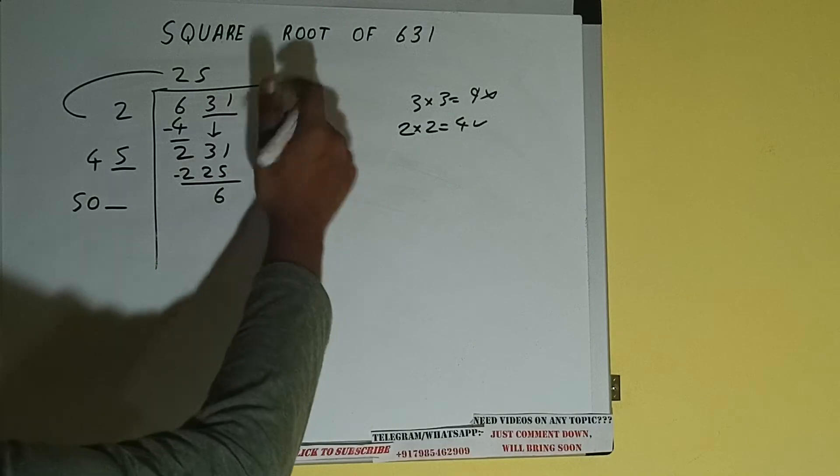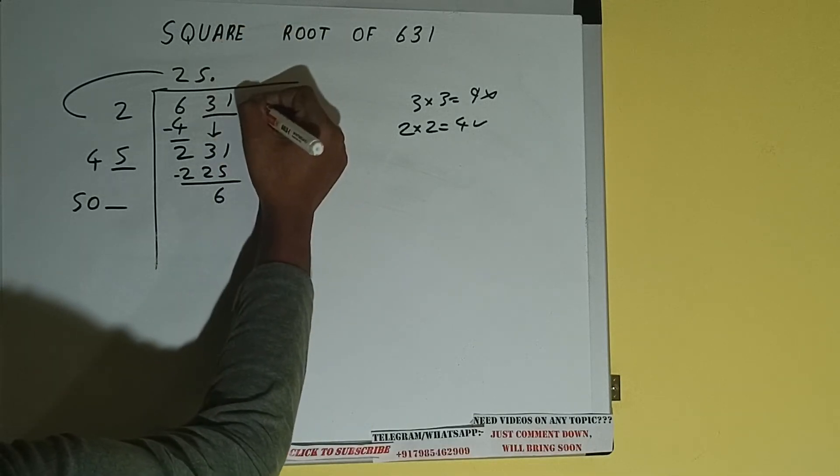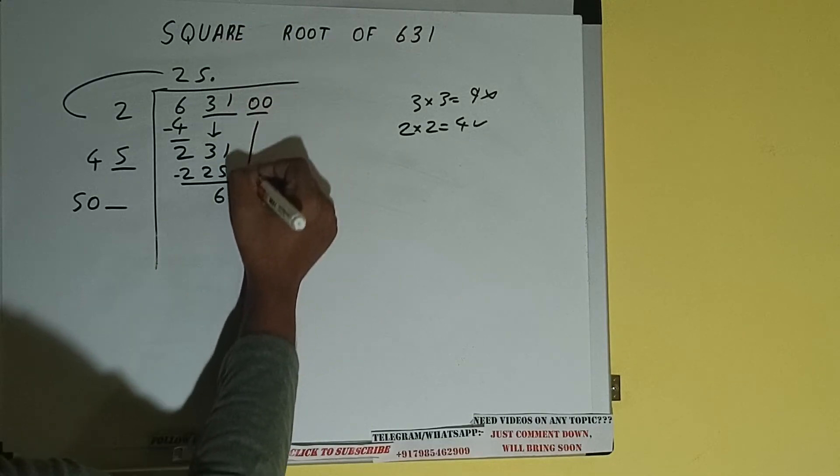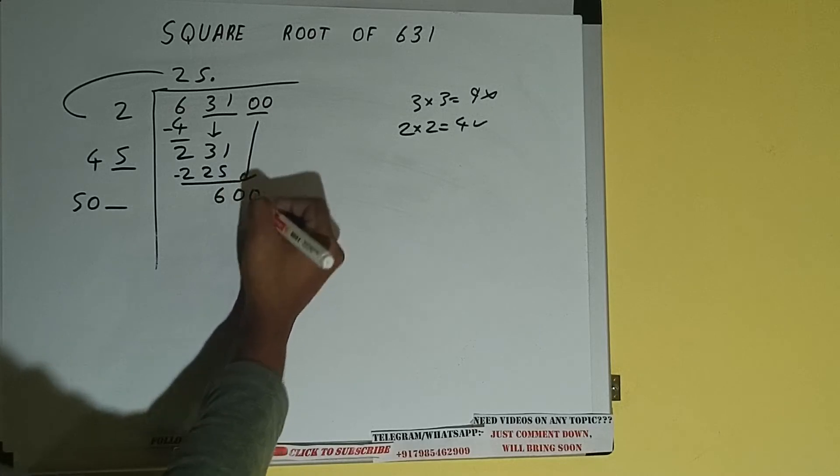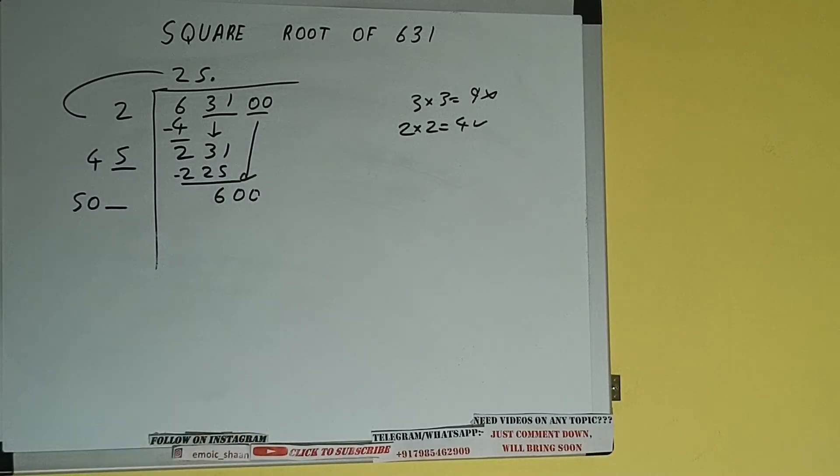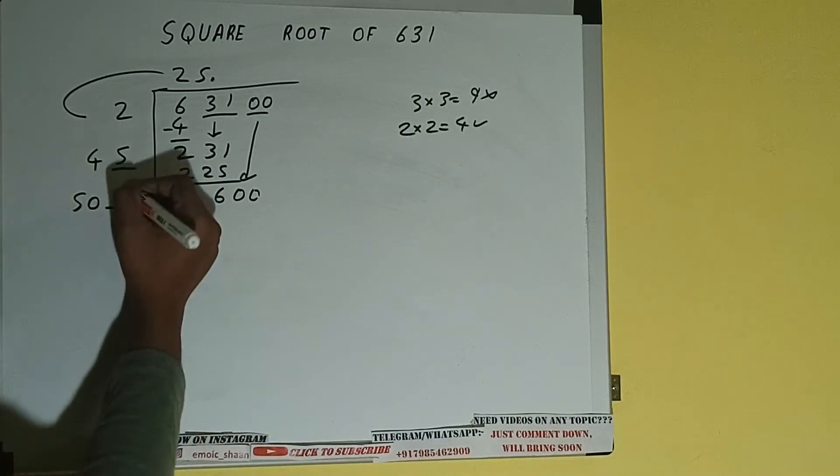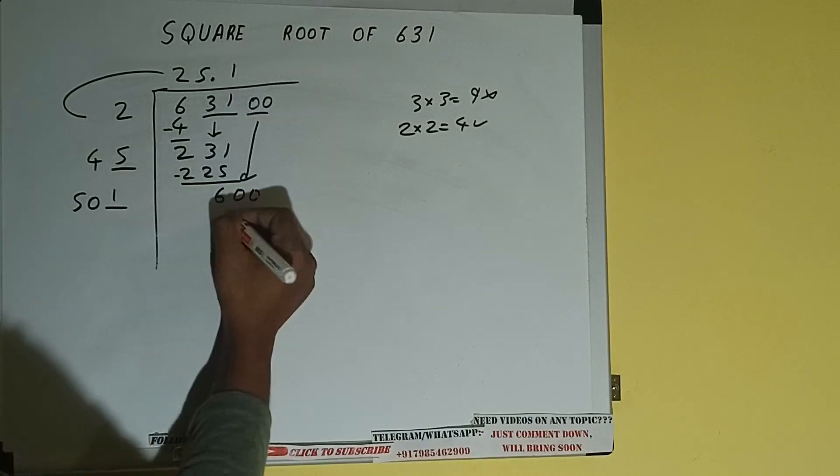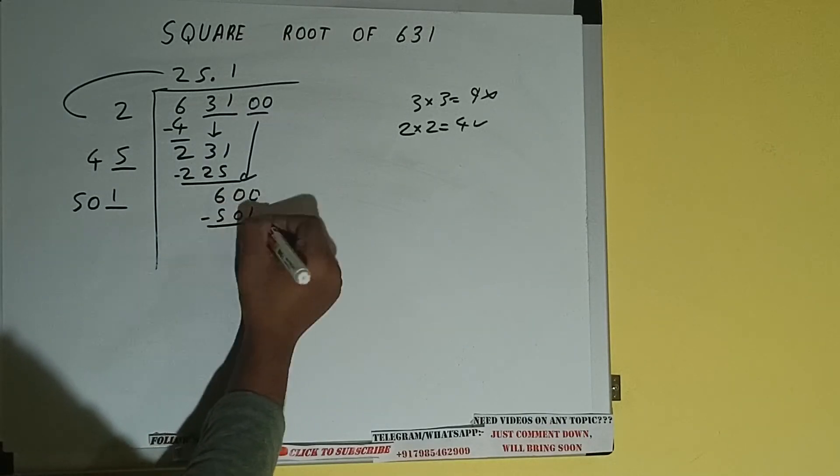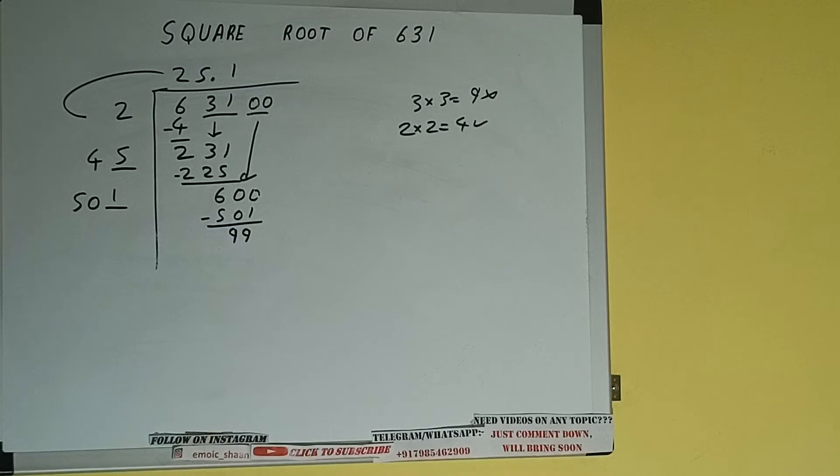But we don't have more pair so we'll put decimal. Once we put decimal we can bring pair of zeros down and number will be 600. And now we can write 1 here and 1 here, 501 subtract, 99 will be left.